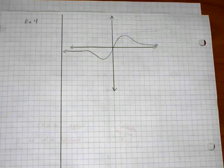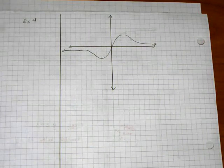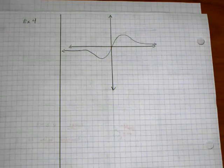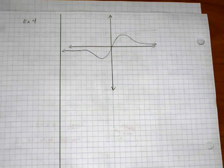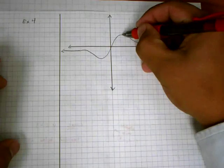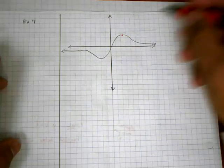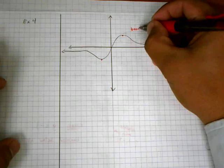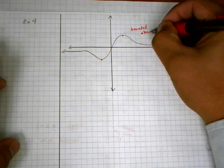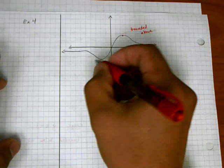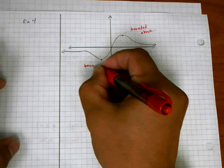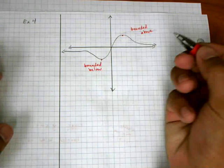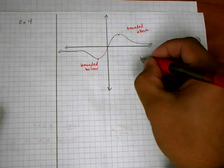One more example: I've drawn a graph without giving its equation. We can see it has a peak, so it has a maximum, and it also has a minimum. Since it has a maximum, this function is bounded above. Since it has a minimum, it is also bounded below. When something is bounded above and below, we simply say that it's bounded.